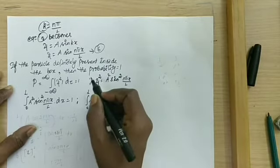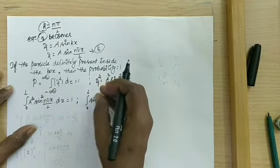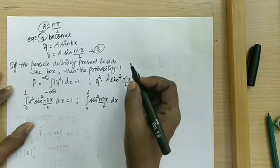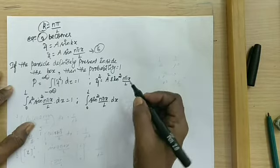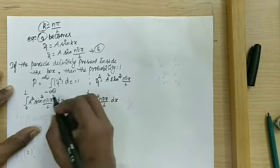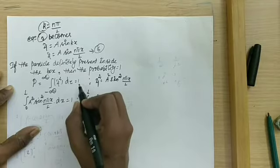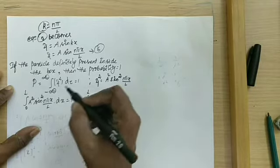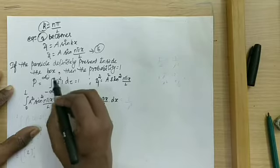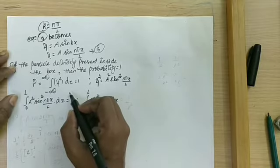Since we have assumed the particle is definitely inside the box, we consider the probability. If the particle is definitely present inside, the probability equals 1; if not present, the probability equals 0. According to the normalization condition, the integral from minus infinity to infinity of psi squared d tau is equal to 1.